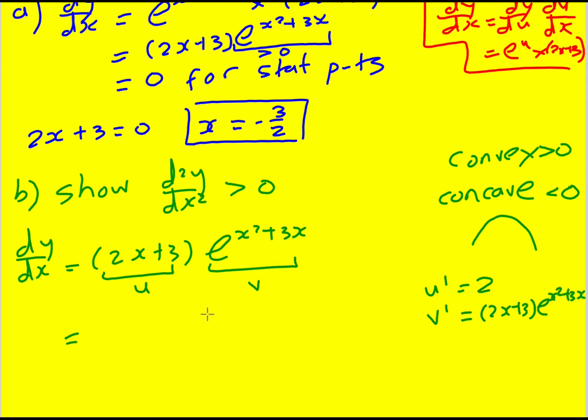So u dash v plus u v dash, that's our product rule formula, becomes 2 e to the x squared plus 3x plus 2x plus 3 squared times e to the x squared plus 3x.